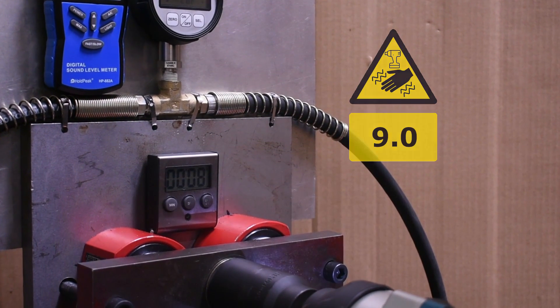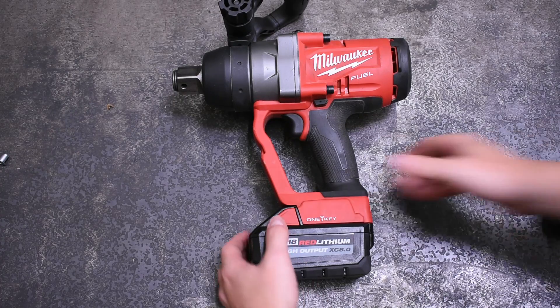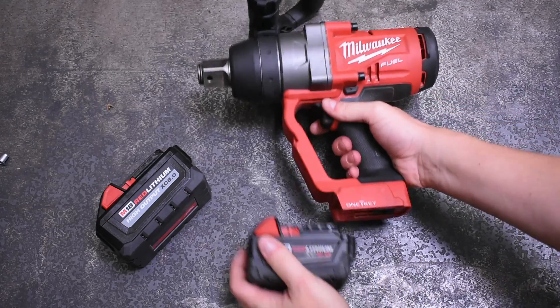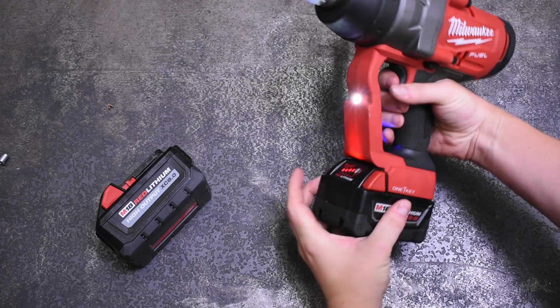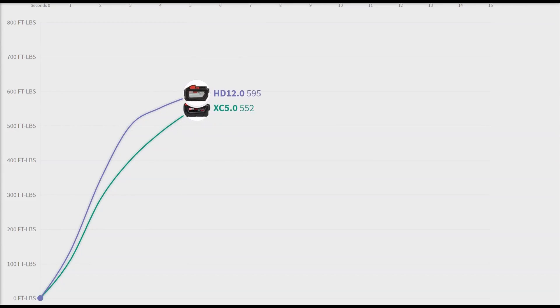As we promised earlier, let's see how this 2867 performs if you are not using the battery it comes with as recommended by Milwaukee - an XC 5.0 that the half-inch high torque was using. When we strapped an HD 12.0 on this half-inch, we saw big dynamic torque gains down low, but ultimately only around 3% in total.